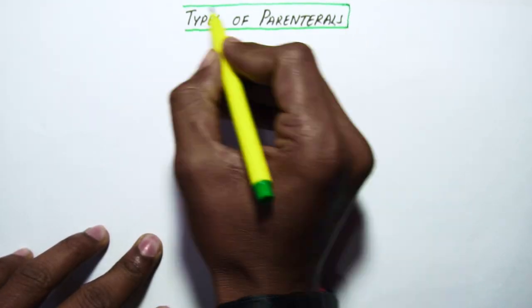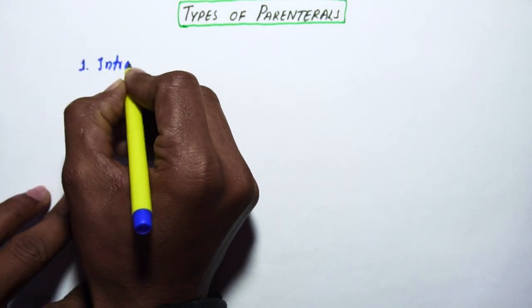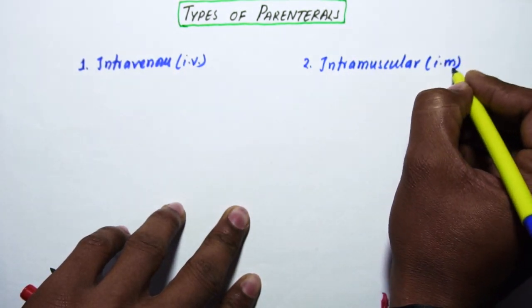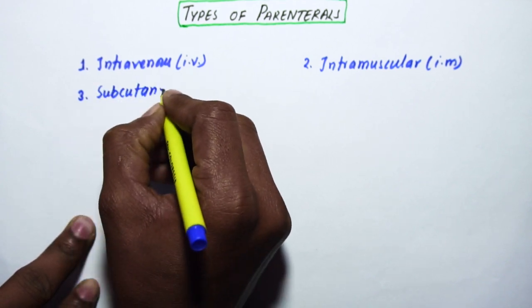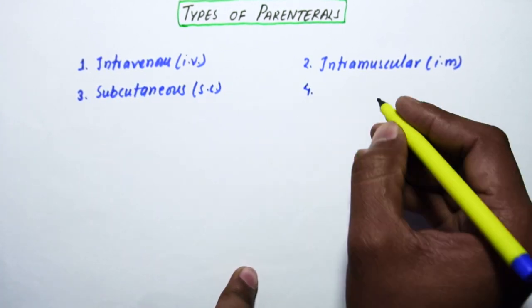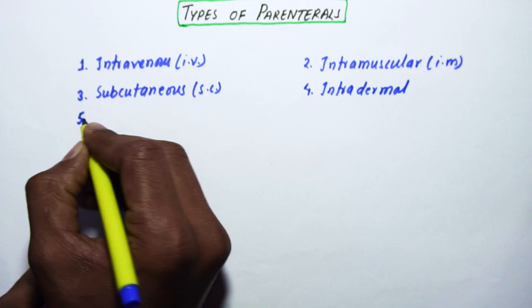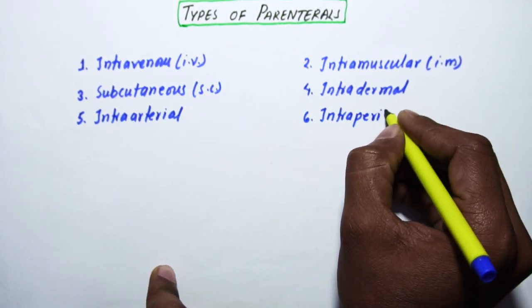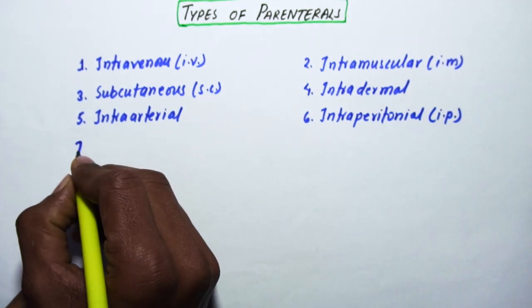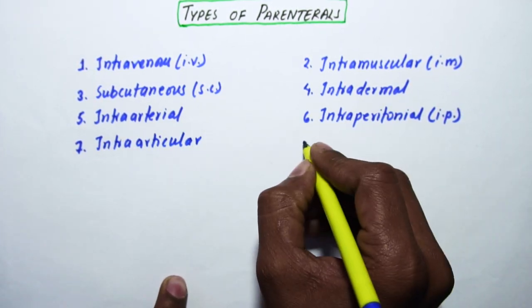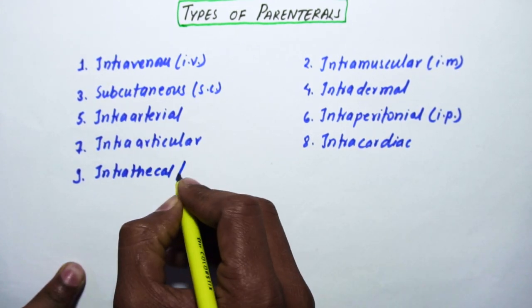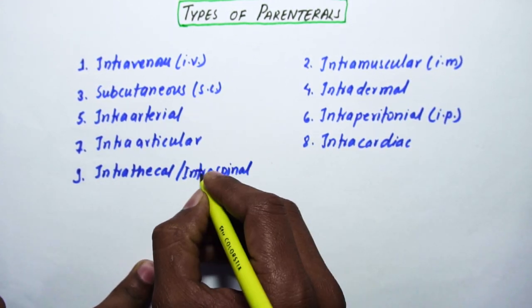Now we will discuss types of parenterals. The first one is intravenous (IV), second is intramuscular (IM), third is subcutaneous (SC), fourth is intradermal, fifth is intra-arterial, sixth is intraperitoneal (IP), intra-articular, intracardiac, intrathecal or intraspinal.